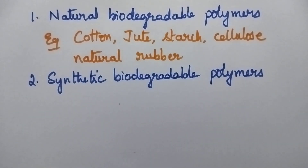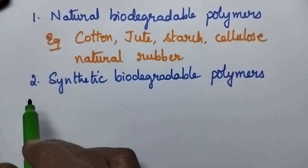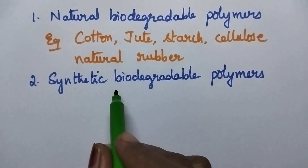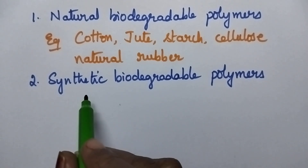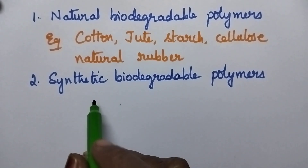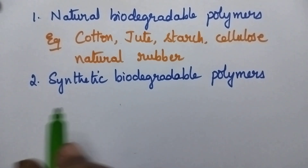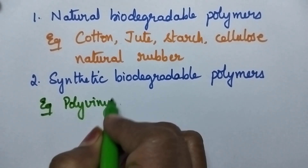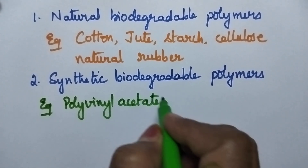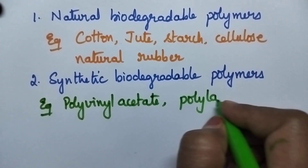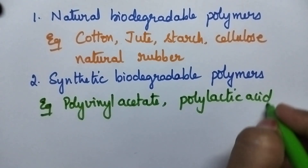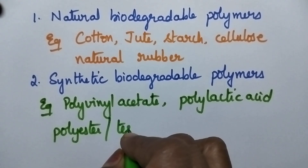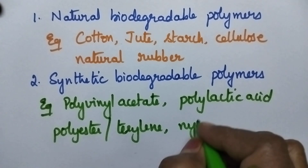Coming to the good examples of synthetic biodegradable polymers — these are prepared in the laboratory from natural origin, and hence they also participate in the biodegradation process and are safe polymers. They generally include polyvinyl acetate, polylactic acid, polyester (also known as Terylene), nylon, etc.